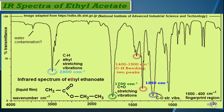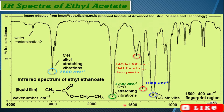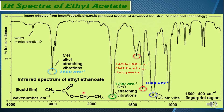After the alkyl group peak at 2800 cm⁻¹, the next important peak is the carbon-oxygen stretching vibration at approximately 1700 to 1750 cm⁻¹. This is due to the carbonyl C=O stretching vibration of the ester group in ethyl acetate — approximately 1750 cm⁻¹.